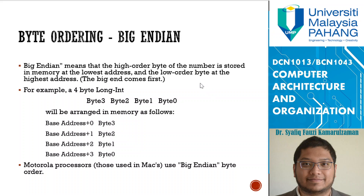In big endian, counting is from the left side. Bytes numbered 0–3 from the right are stored in reverse: base address+0 holds byte 3, base address+1 holds byte 2, base address+2 holds byte 1, and base address+3 holds byte 0. Motorola processors, used in Macs, use big endian byte order.